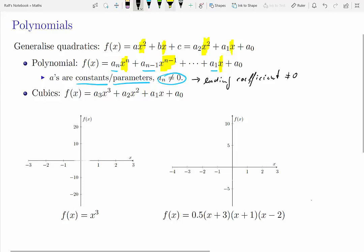So that polynomial which you see here, if an is unequal to 0, is an nth order polynomial.